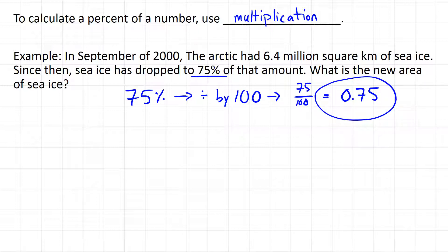So now we can calculate 75% by multiplication, 0.75 times 6.4 million square kilometers. So 0.75 times 6.4 is equal to 4.8 million square kilometers.